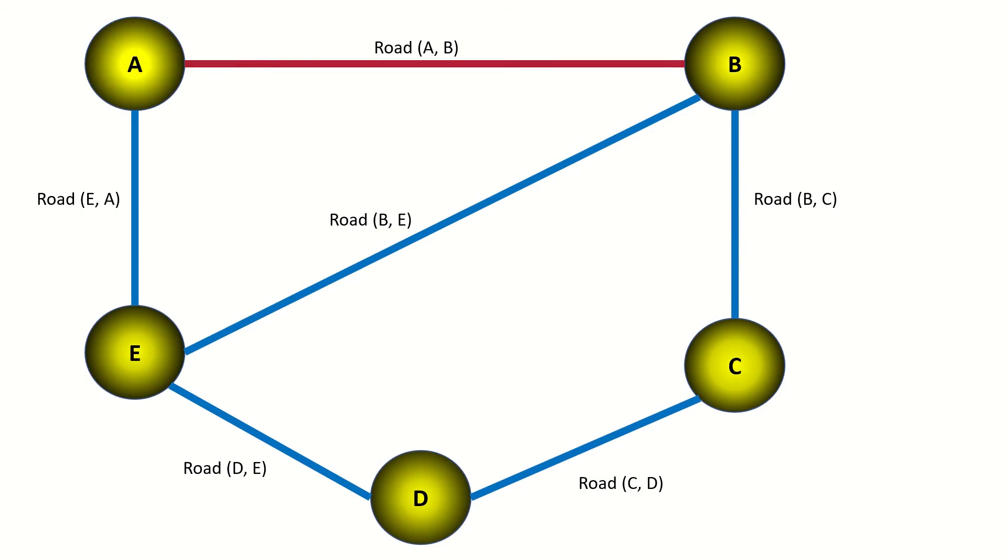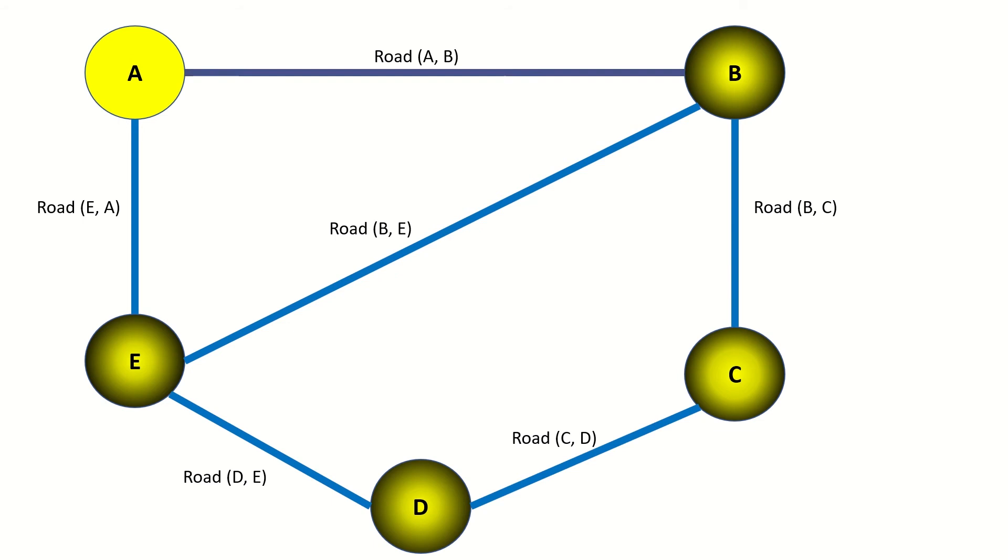A walk through this network would be equivalent to traveling between some sequence of cities. You're allowed to visit the same city as many times as you like, and you're allowed to use the same road as many times as you like. If after your walk you ended up at the same city that you started from, then we call that a closed walk. If you ended your walk on a different city than you started from, we call that an open walk.